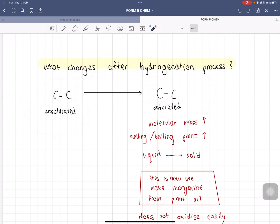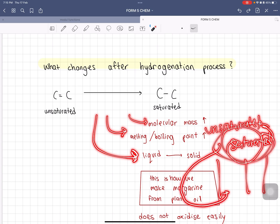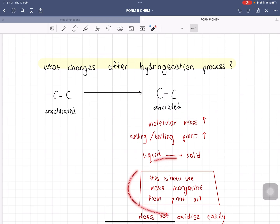What happens after that? The molecular mass increases, the melting and boiling point increases, the liquid turns into solid because now the unsaturated fatty acids are saturated. We saw in the column that saturated fatty acids or saturated fats or oils are usually in the state that is solid. This is how we make margarine from plant oil.